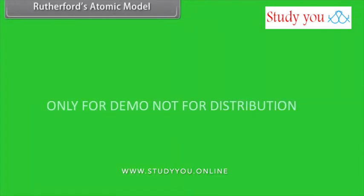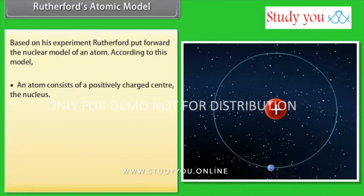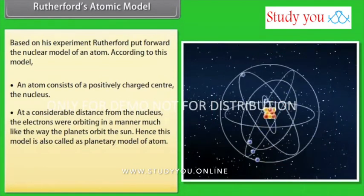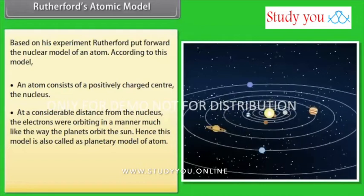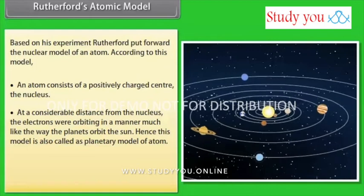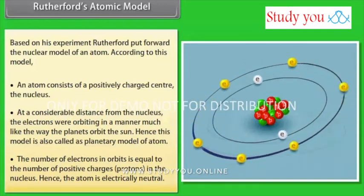Rutherford's Atomic Model. Based on his experiment, Rutherford put forward the nuclear model of an atom. According to this model, an atom consists of a positively charged center, the nucleus. At a considerable distance from the nucleus, the electrons were orbiting in a manner much like the way the planets orbit the sun. Hence, this model is also called the planetary model of atom. The number of electrons in orbits is equal to the number of positive charges, protons, in the nucleus. Hence, the atom is electrically neutral.